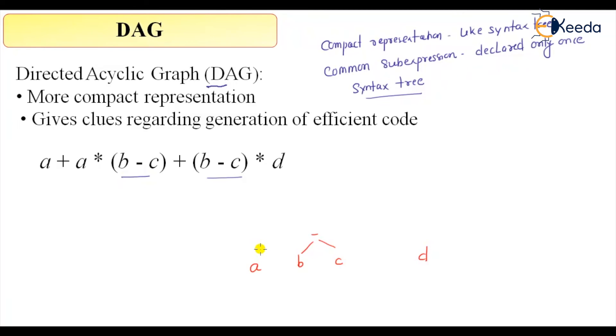Then there is a multiplication between this B minus C. Then there is a plus among A and this part, a plus between A and this part.